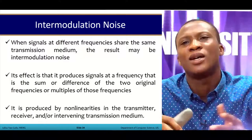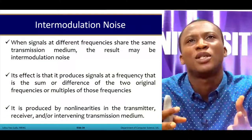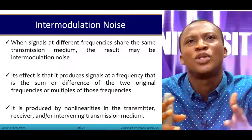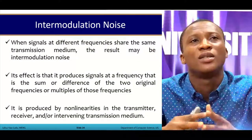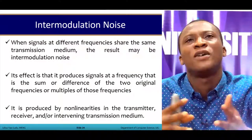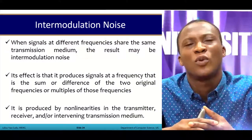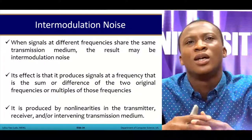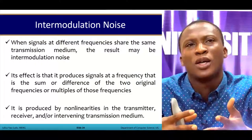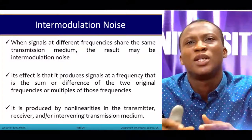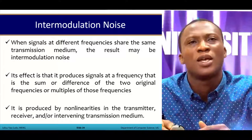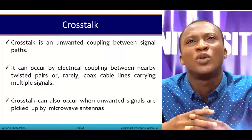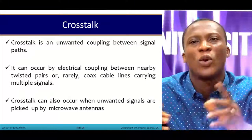Intermodulation noise occurs when signals at different frequencies share the same transmission medium. The result is signals produced at varying frequencies — the sum or difference of the two original frequencies, or multiples of those frequencies. This produces non-linearity in the transmitter, the receiver, and the intervening transmission medium.